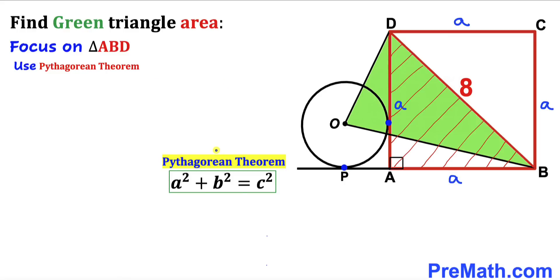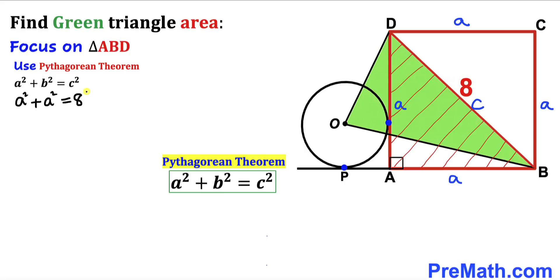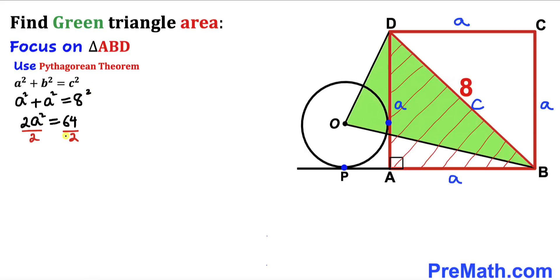Let's recall the Pythagorean theorem: A² + B² = C², where the longest leg is side C. So we fill in the formula: a² + a² = 8². This becomes 2a² = 64. Dividing both sides by 2, a² turns out to be 32.